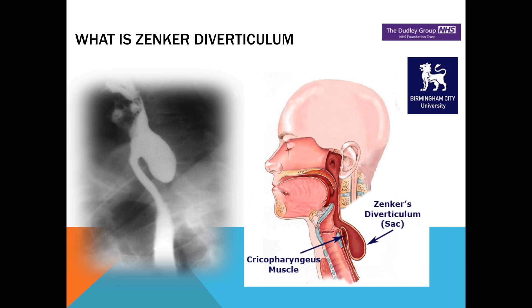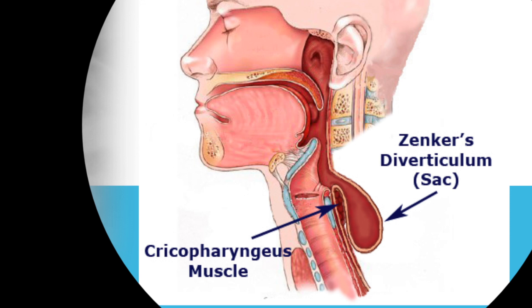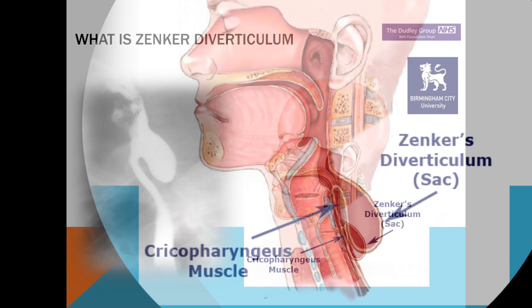Zenker's diverticulum is a rare condition in which a large sac develops in the upper part of the esophagus. On this slide, the picture on your left is a radiology image in which barium was given for the patient to drink — you can see a sac, which is the pouch. Normally it should not be there. The picture on the right shows the sac, and in the middle is the muscle we call the cricopharyngeus muscle. This muscle is the real problem — it goes into spasm and doesn't allow food into the food pipe, hence this back pouching occurs and a pouch develops.